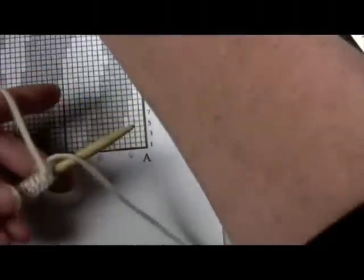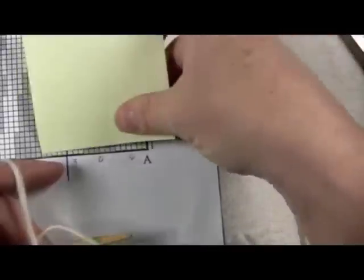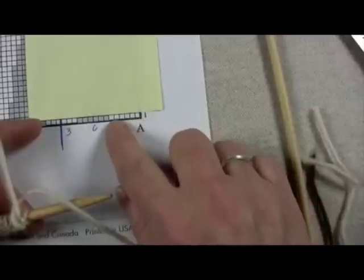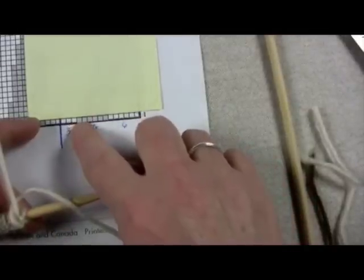I cast on with the light color because that's the first color that's going to happen here on row one. Now I'm ready to work. Take my sticky and mark off my first row so I can really see what I'm doing. I have six whites, six darks, and three whites.